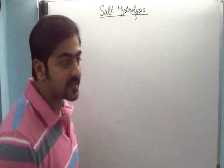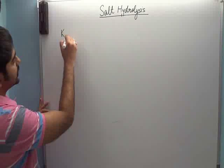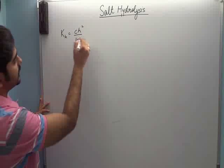Now, is cheez ko karne ka shortcut hum log sikhte hain. Humare paas ik equation tha ki H is equal to CH square upon 1 minus H.